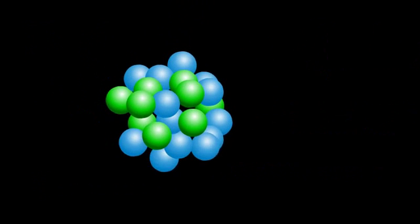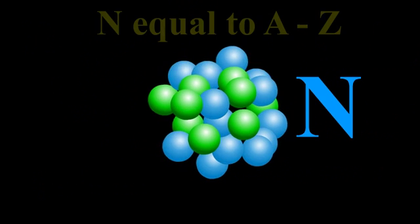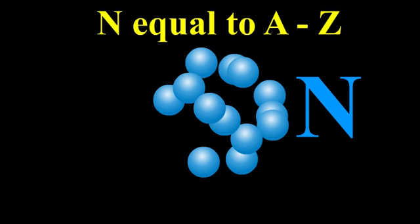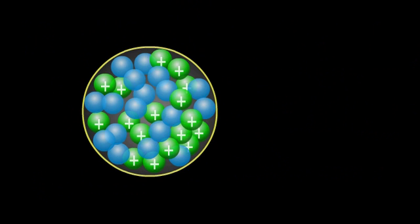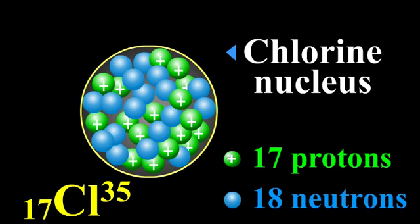The number of neutrons is represented as n, which is equal to A minus Z. For example, the chlorine nucleus is represented as Cl-35 with subscript 17. It contains 17 protons and 18 neutrons.